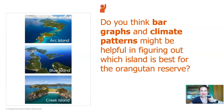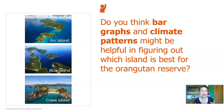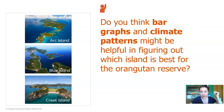Do you think bar graphs and climate patterns might be helpful in figuring out which of the three islands would be best for the orangutan reserve? I think so too. I hope we can get some climate data across many years for all three islands, then we could compare them and see which one would have the best weather over the long range for the orangutans.